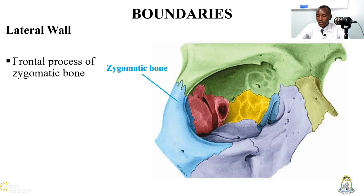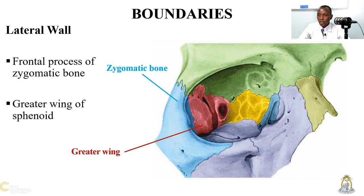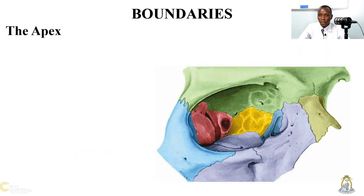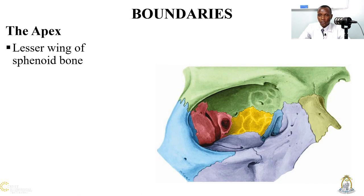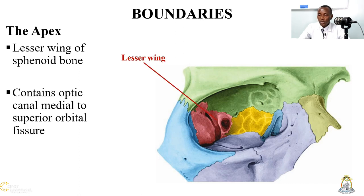The lateral wall medially is contributed by the frontal process of the zygomatic bone and the greater wing of the sphenoid bone. And lastly, the apex is contributed by the lesser wing of the sphenoid bone, and it carries a very important structure, as it accommodates the opening for the optic canal, which is medial to the superior orbital fissure. The optic canal is a passageway for the optic nerve and the ophthalmic artery.